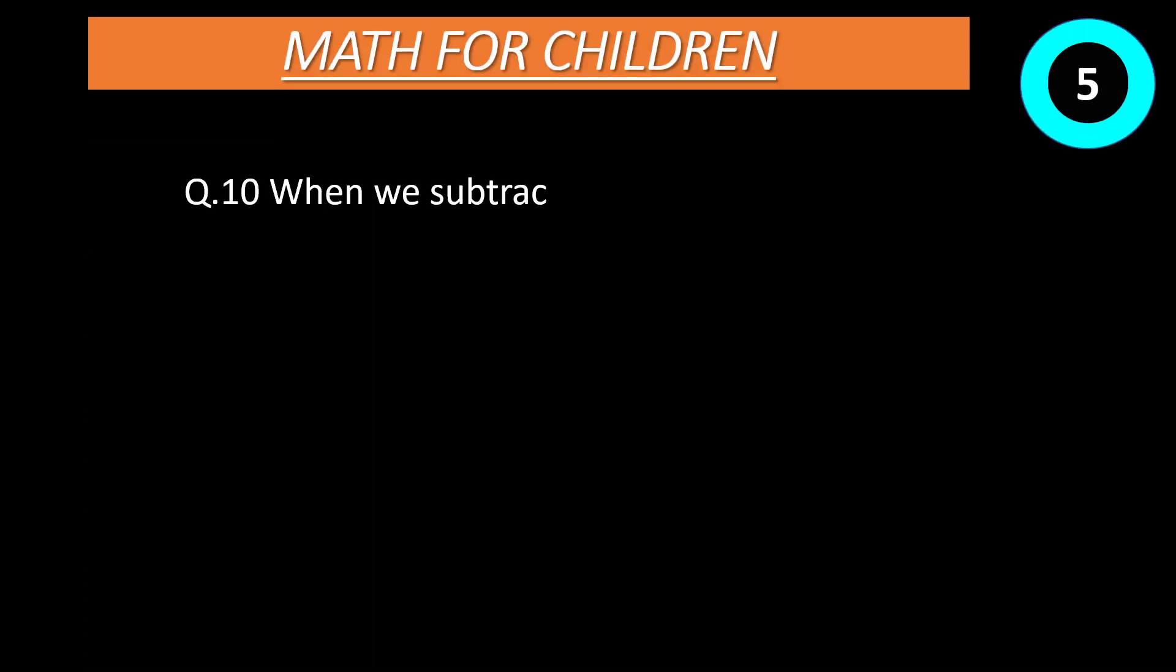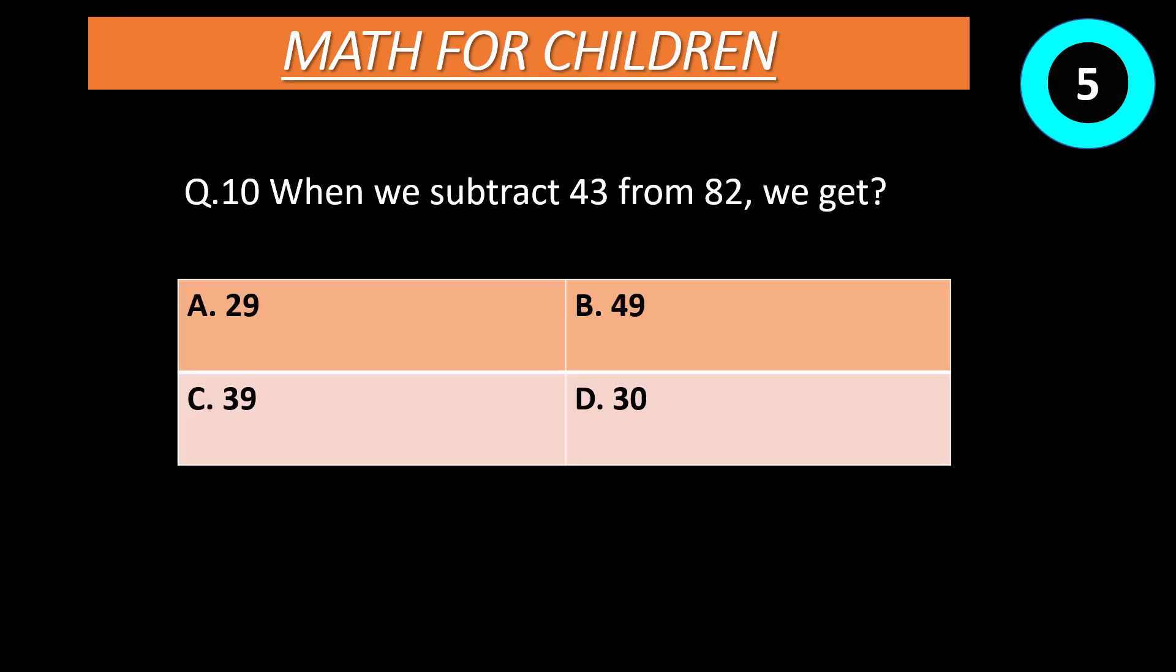Question number 10: When we subtract 43 from 82, we get? Option A: 29. Option B: 49. Option C: 39. Option D: 30. Time start now. Correct answer is C, 39.